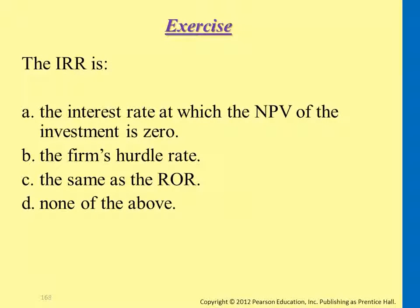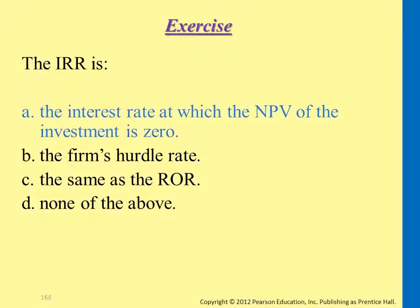What is IRR? The definition is: the interest rate at which the NPV of the investment equals zero. We set NPV to zero on purpose because we want to represent the positive or negative NPV using a ratio form. So the answer is A.